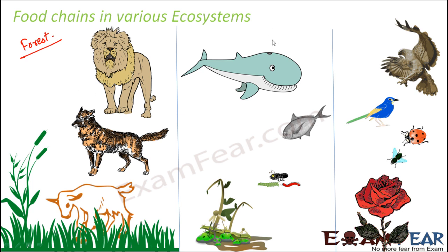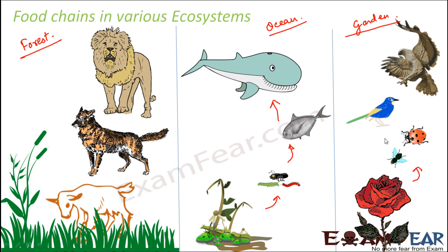An ocean is also an example of an ecosystem because all aquatic animals get everything they need within the ocean. There, aquatic plants are eaten by small aquatic insects, which are eaten by small fish, which are eaten by big fish. A garden is also an ecosystem: plants provide nectar to insects, insects are eaten by birds, and birds are eaten by bigger birds like hawks. In every ecosystem, food chains exist.